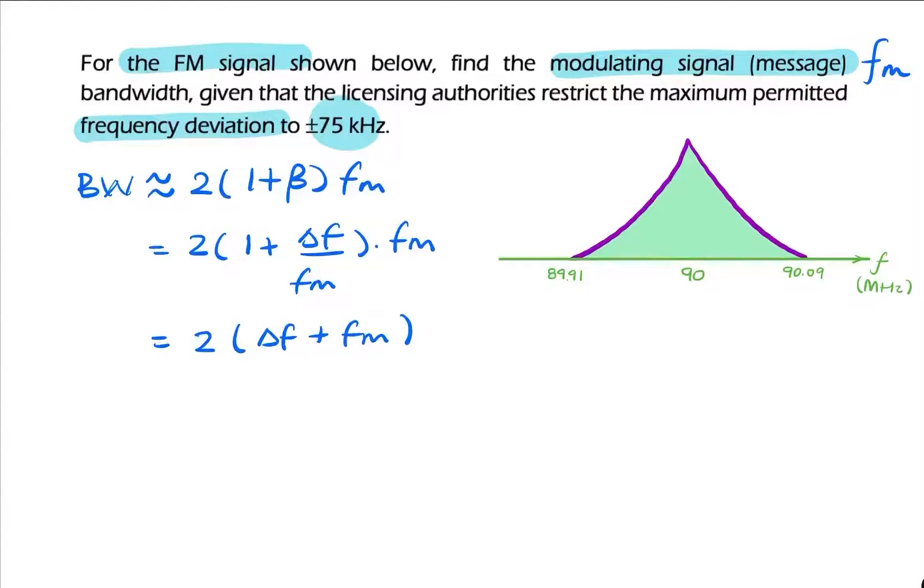This is a really useful expression. It tells us that the bandwidth can be found by adding the frequency deviation and the message bandwidth, then multiplying by 2. So it's a useful way to look at the FM spectrum.